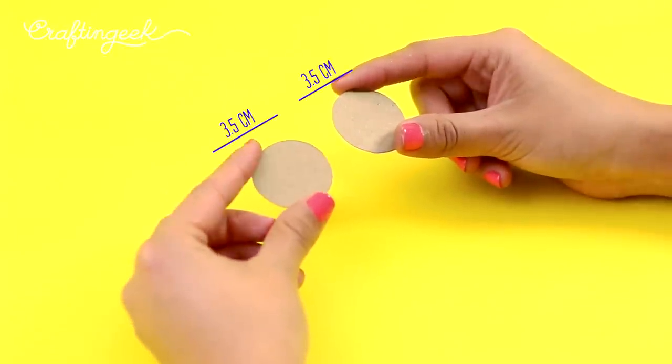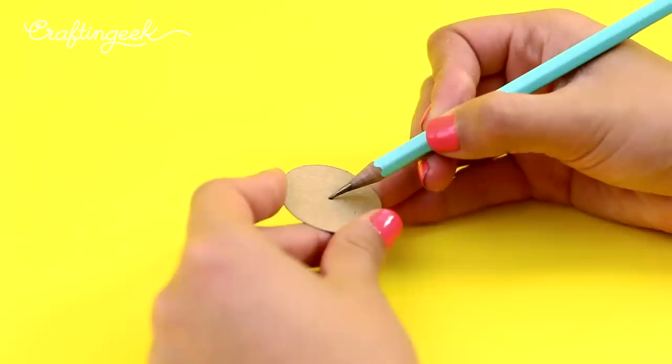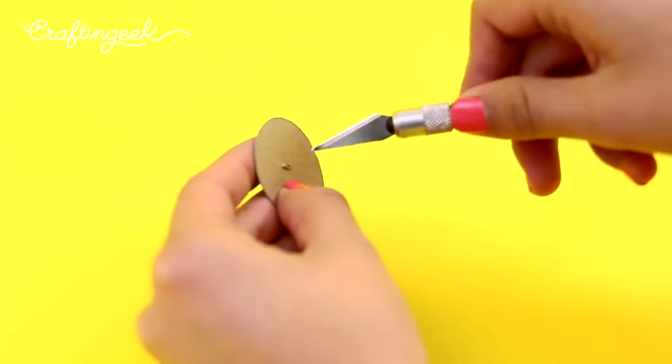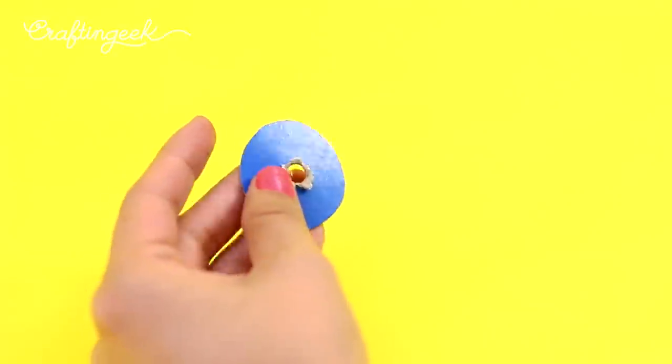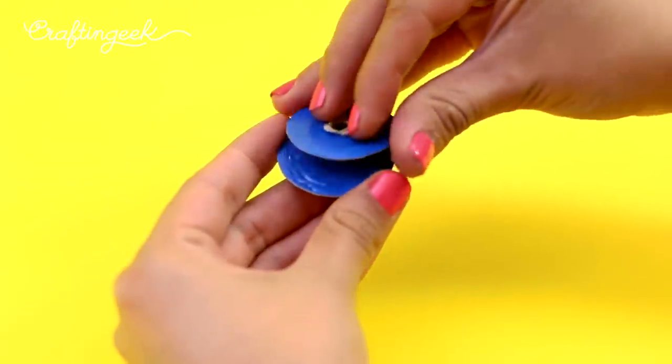For the knobs we're going to use two paperwork circles of 3.5 centimeters. We're going to punch a hole through the center. Remember that a pencil or a thick stick should be able to fit inside. Then we're going to paste them. This is only to make it sturdy enough.